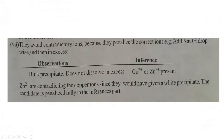Avoid contradictory ions. For example, if you add sodium hydroxide dropwise until in excess and a blue precipitate forms that does not dissolve in excess, that confirms Cu²⁺ ions. If you then also write 'Zn²⁺ ions present,' that is a contradiction — zinc gives a white precipitate, not blue. The contradiction cancels your correct answer and you get zero for the inference.